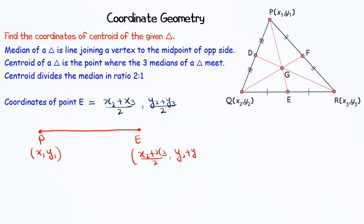So here, we will simply apply the section formula. In the section formula, 2 gets multiplied with the coordinates of E, and 1 gets multiplied with the coordinates of P.